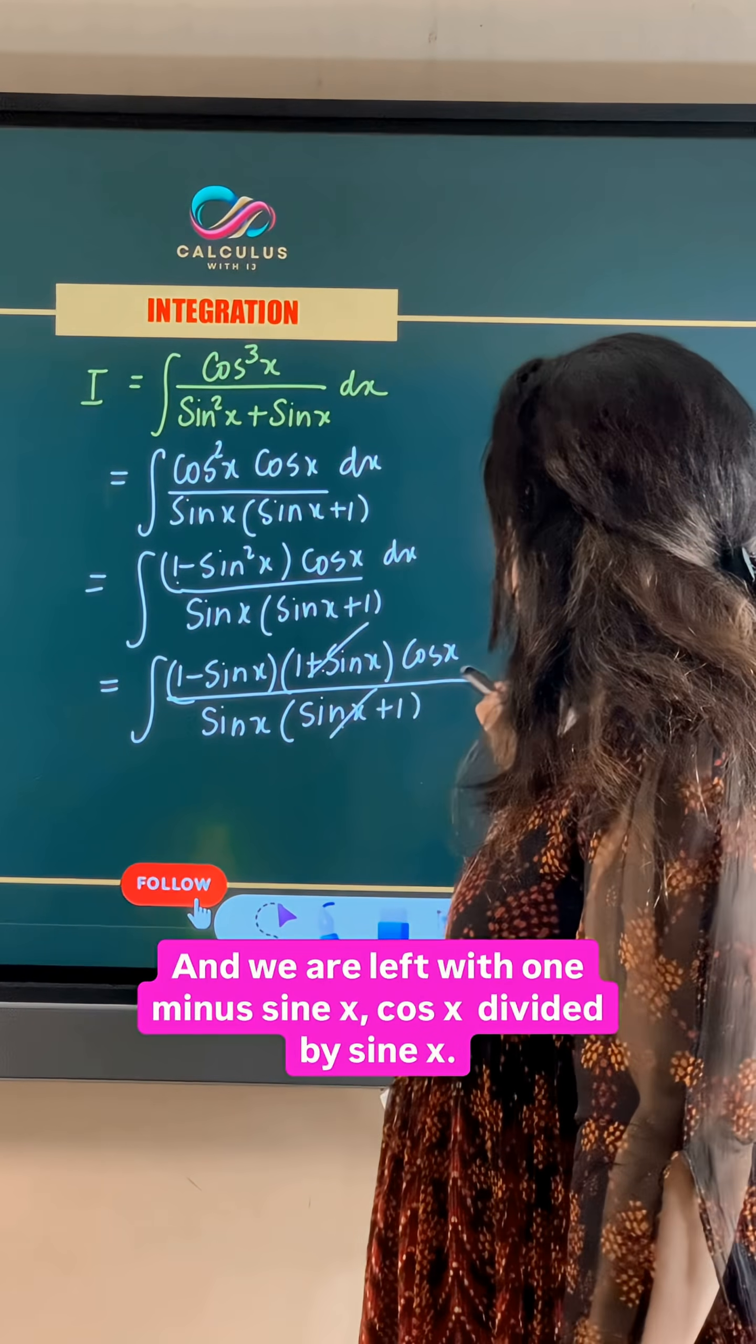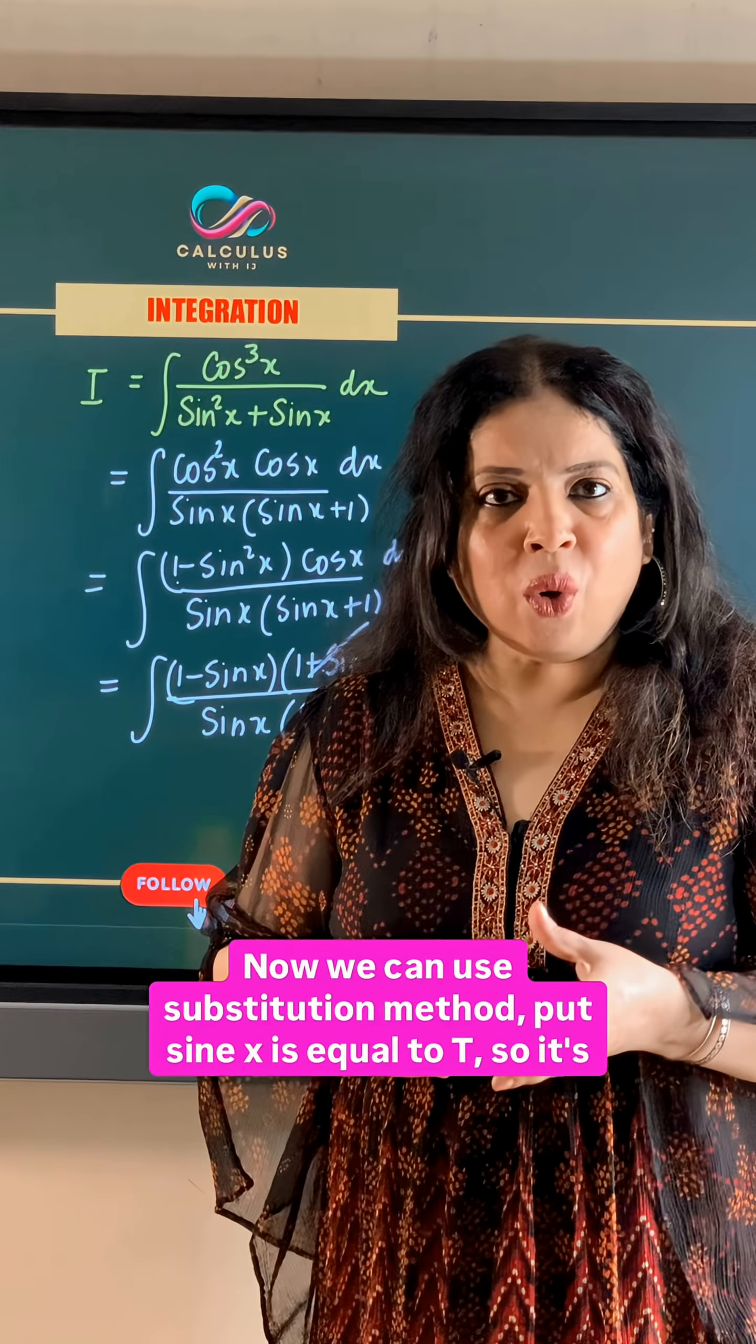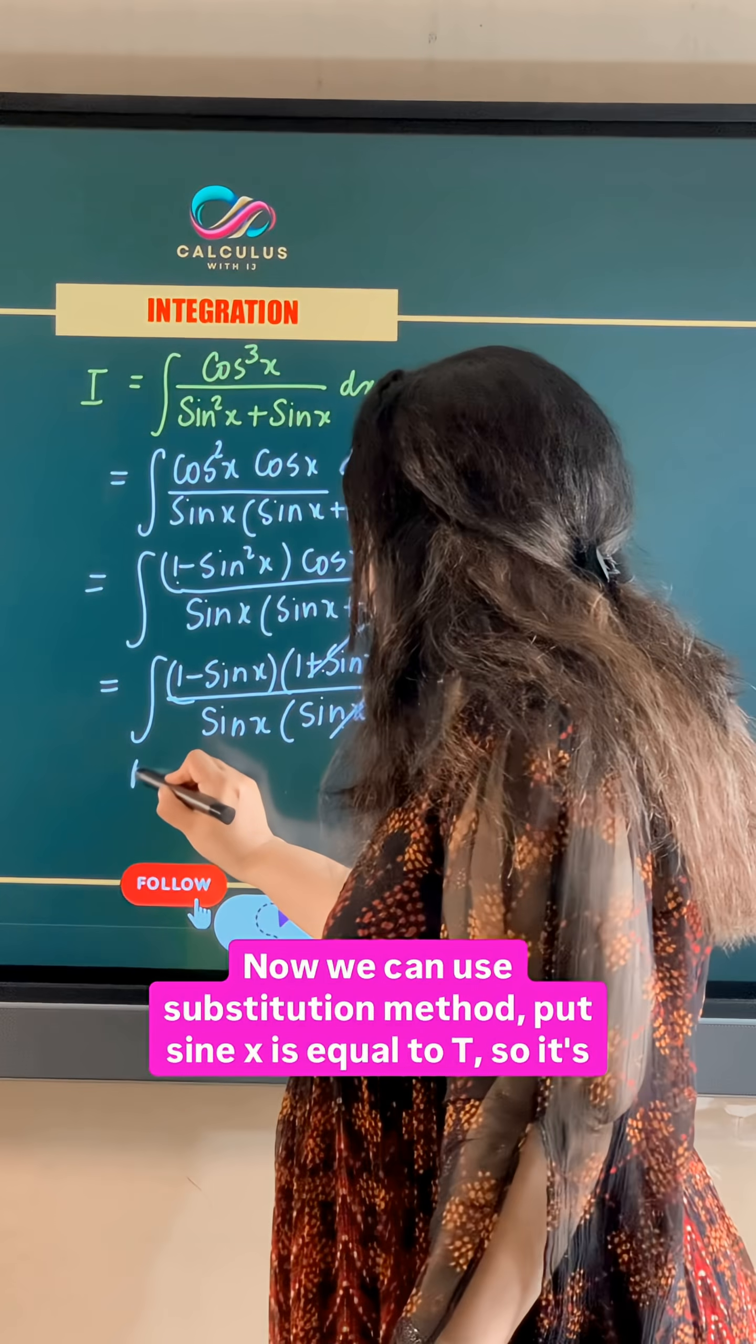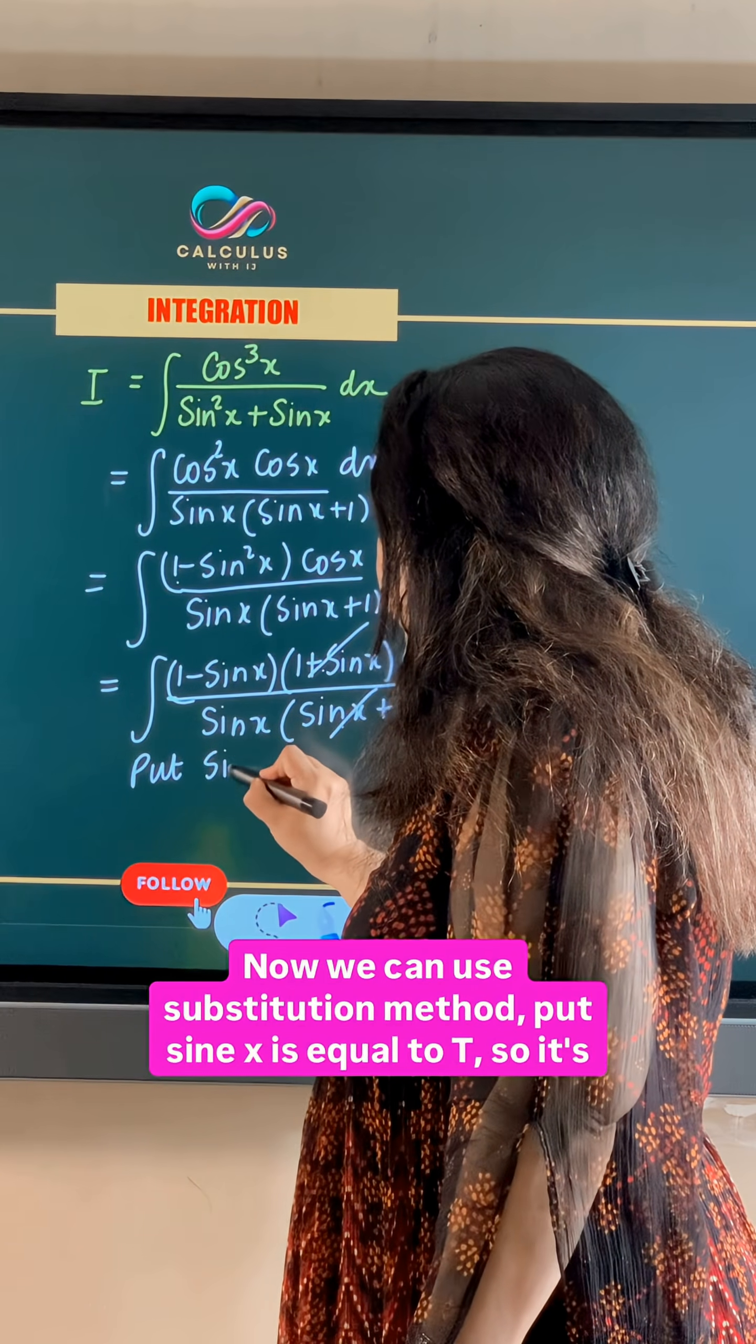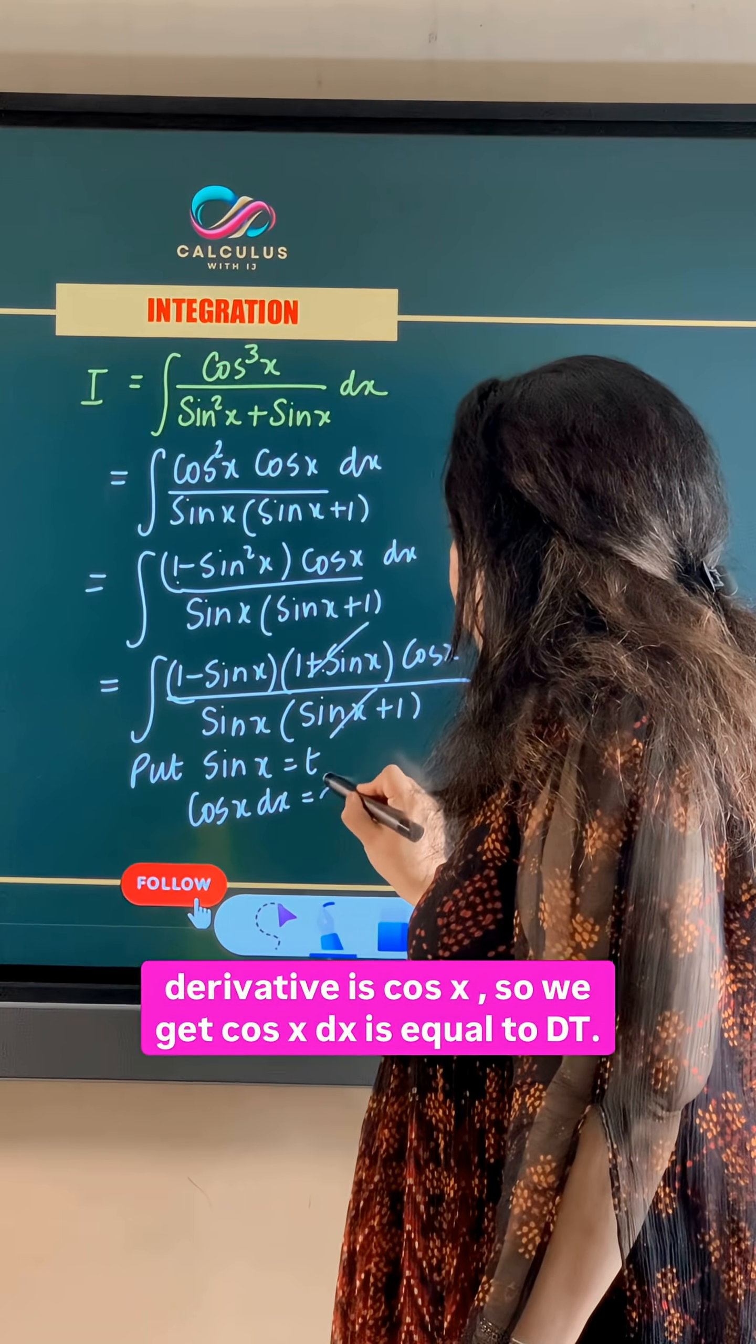We are left with 1 minus sin x, cos x divided by sin x. Now we can use substitution method. Put sin x is equal to t. So its derivative is cos x. So we get cos x dx is equal to dt.